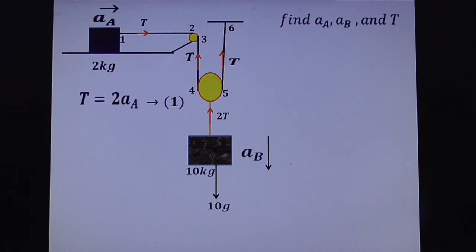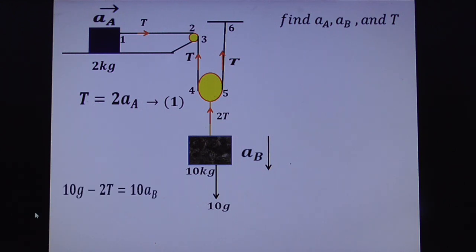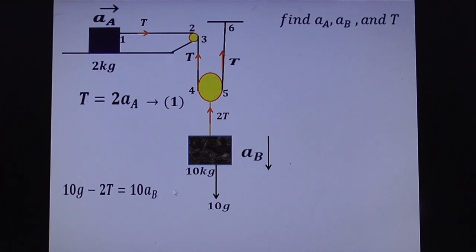The 10g force acts downwards on the 10 kg mass, and 2T acts upwards. Taking downward as positive (direction of acceleration of B), the net force equation is: 10g − 2T = 10·A_B. This is equation number two.